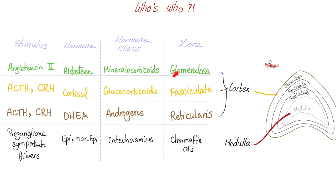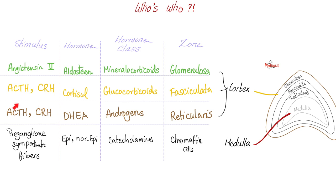Adrenal cortex: you have zona glomerulosa secreting mineralocorticoids such as aldosterone — called mineralo because it raises your serum sodium, which is a mineral. Zona fasciculata secretes glucocorticoids like cortisol — called gluco because it raises your blood glucose. The reticularis secretes androgens such as dehydroepiandrosterone. Aldosterone release is stimulated by angiotensin 2 in the renin-angiotensin-aldosterone system. Cortisol and adrenal androgens are stimulated by ACTH from the anterior pituitary, which is influenced by CRH from the hypothalamus.